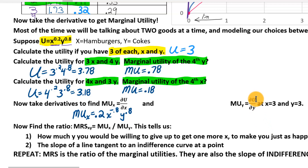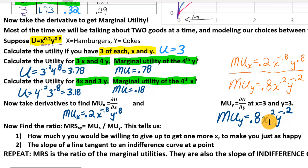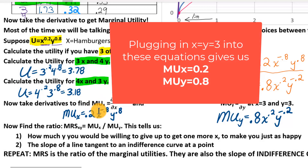Pause the video and find the function for the marginal utility of Y. You should get MU_Y = 0.8 × X^0.2 × Y^(−0.2). You take the derivative of the Y term — multiply by 0.8 and subtract one from the exponent (0.8 − 1 = −0.2). You can plug any values of X and Y into these functions to get the rate at which marginal utility increases as you consume more of X or Y.